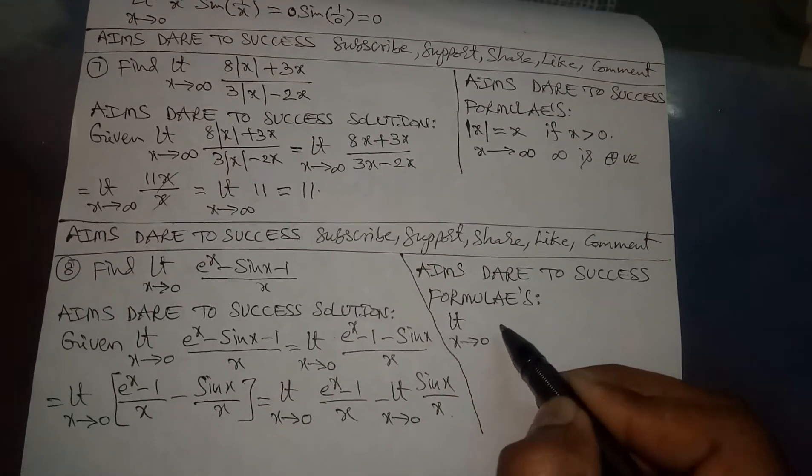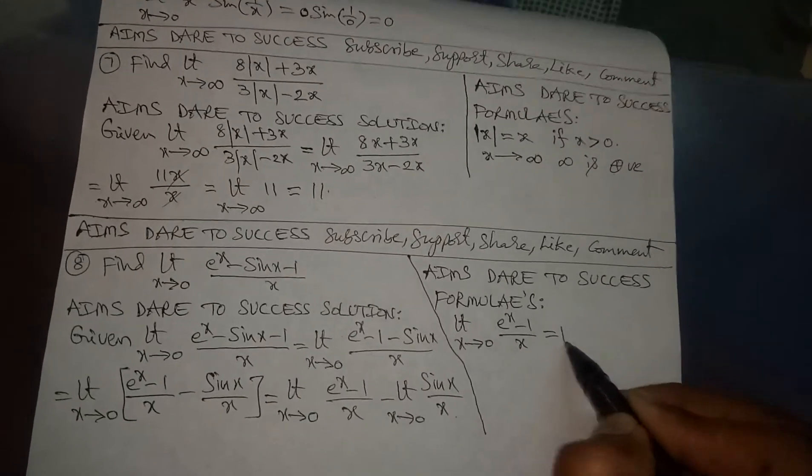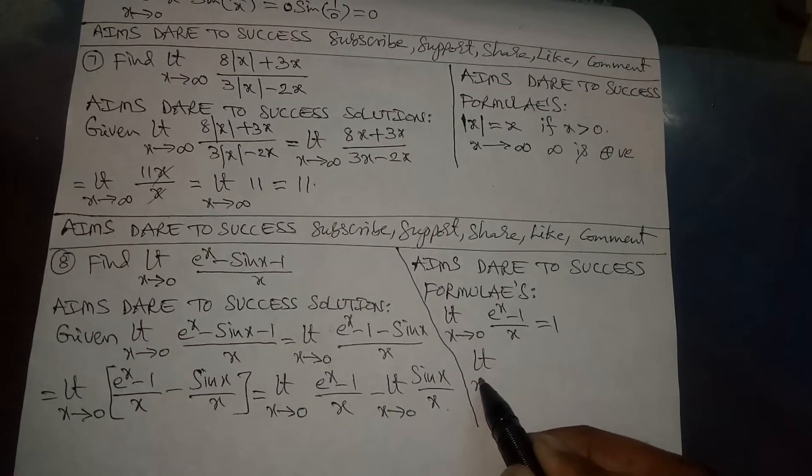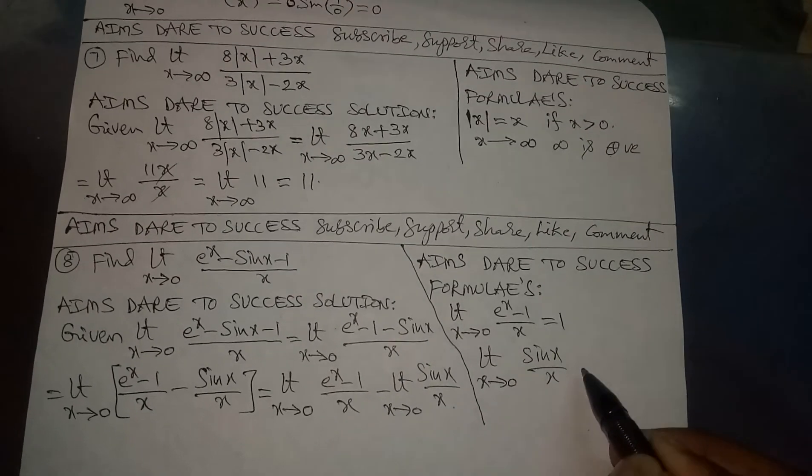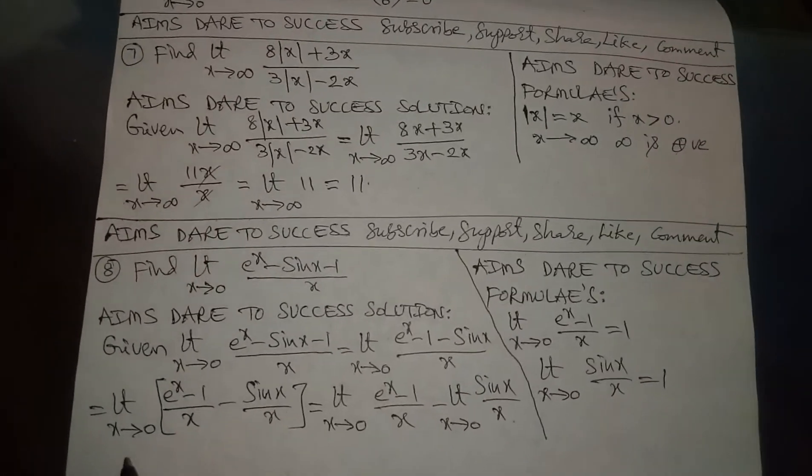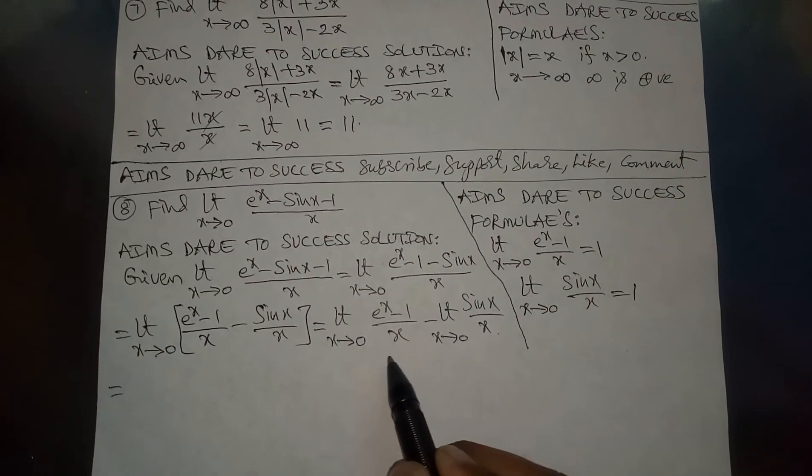Formulas: limit x tends to 0 of (e^x - 1) / x is equal to 1. Next formula: limit x tends to 0 of sin x / x is equal to 1. Substitute the formulas: limit x tends to 0 of (e^x - 1) / x...